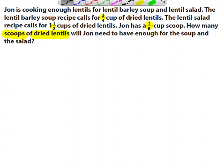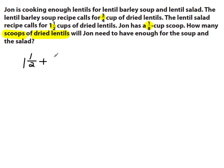I'm going to set this up based on the book's approach. I'll take the number of cups of lentils needed for each recipe and add those together — one and a half cups plus three-quarter cup — to get the total amount of lentils needed for both recipes. Then I'll divide that total by the one-eighth cup scoop, which will tell me how many scoops are needed.